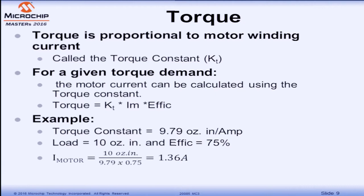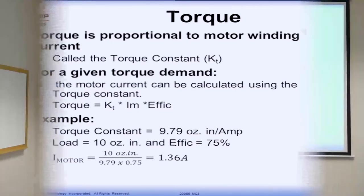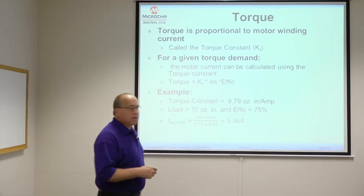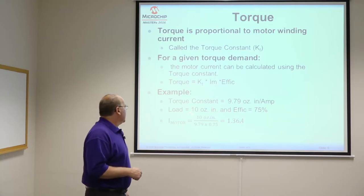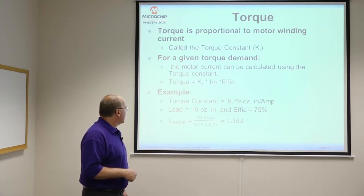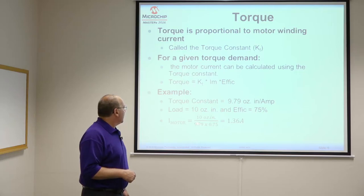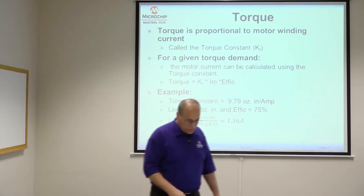Torque is proportional to the current flowing in the motor. Using the torque constant of that particular motor, you can calculate what the current is, or vice versa — knowing what current you're going to put into the motor, you can calculate what torque it will produce. Another factor that affects current and torque is motor efficiency. Using that information from the datasheet, you can get a more accurate calculation. In this example, if you want to know motor current, you take the load torque, divide by the torque constant and the efficiency — in this case, about 1.36 amps.